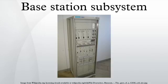The BTSs are equipped with radios that are able to modulate layer 1 of the air interface. For GSM 2G+, the modulation type is Gaussian minimum shift keying (GMSK), while for EDGE-enabled networks it is GMSK and 8PSK. This modulation is a kind of continuous phase frequency shift keying. In GMSK, the signal to be modulated onto the carrier is first smoothed with a Gaussian low-pass filter prior to being fed to a frequency modulator, which greatly reduces the interference to neighboring channels.